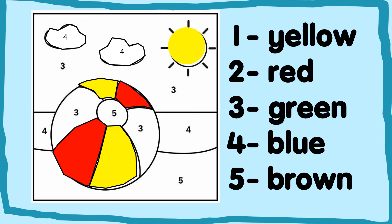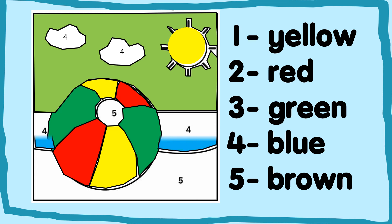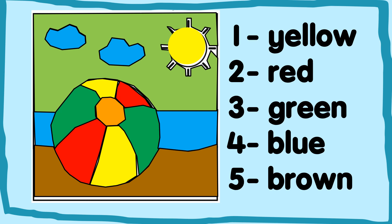3 is green. Where is 3? Yes, it's on the ball. And the sky a bit green. 4 is blue. The sea is blue, and the clouds are also blue. 5 is brown. Our picture is done.